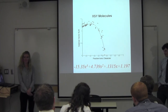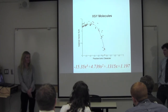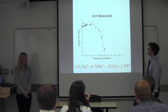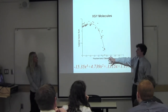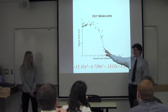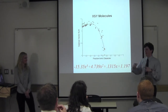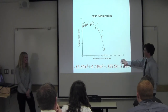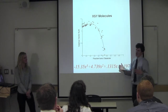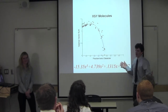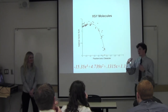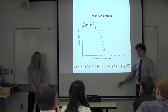Why did you choose a third-order polynomial to fit the data? Was there a theoretical reason? Our sulfur data was the one we had the most points on, and it fit really well with a third-order polynomial, so we wanted to keep it consistent. Because this one fit so well, we just tried to keep it for the other two, even though the fits weren't quite as good.